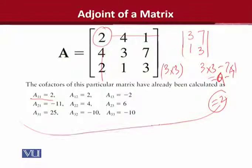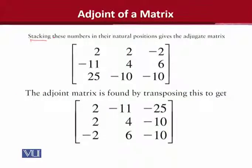So, here you can see the value is 2. Similarly, for your rehearsal A12, A13, A21 and all these cofactors you can calculate. And then you should put them into their natural positions. This is where we are putting them in their natural positions. And after this process, the matrix we get we can call the adjugate matrix.